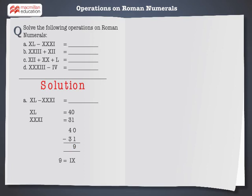Now convert the result into Roman numerals. 9 is equal to IX. Hence, XL minus XXXI is equal to IX.